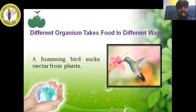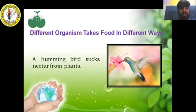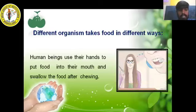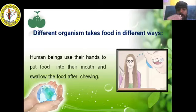Different organisms take food in different ways. The hummingbird sucks nectar, which is a sweet juice, from flowers. Human beings use their hands to put food into their mouth, chew the food using the tongue and teeth, and then swallow it.